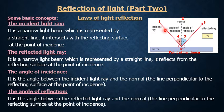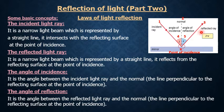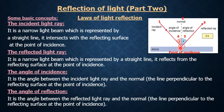When this incident light ray falls on a reflecting surface, it will reflect. When it reflects, it is called the reflected light ray. It is the light beam represented by a straight line that reflects from the reflecting surface at the point of incidence.